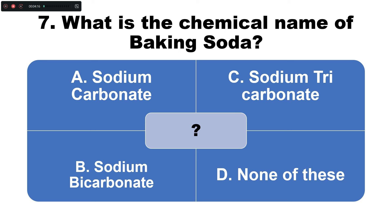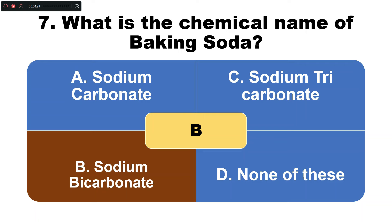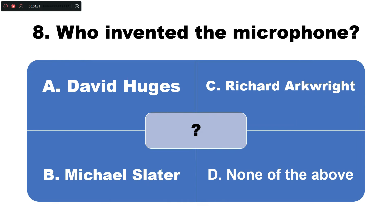Question number seven: What is the chemical name of baking soda? Option A: sodium carbonate, B: sodium bicarbonate, C: sodium tricarbonate, D: none of these. The correct answer is option B — the chemical name of baking soda is sodium bicarbonate.